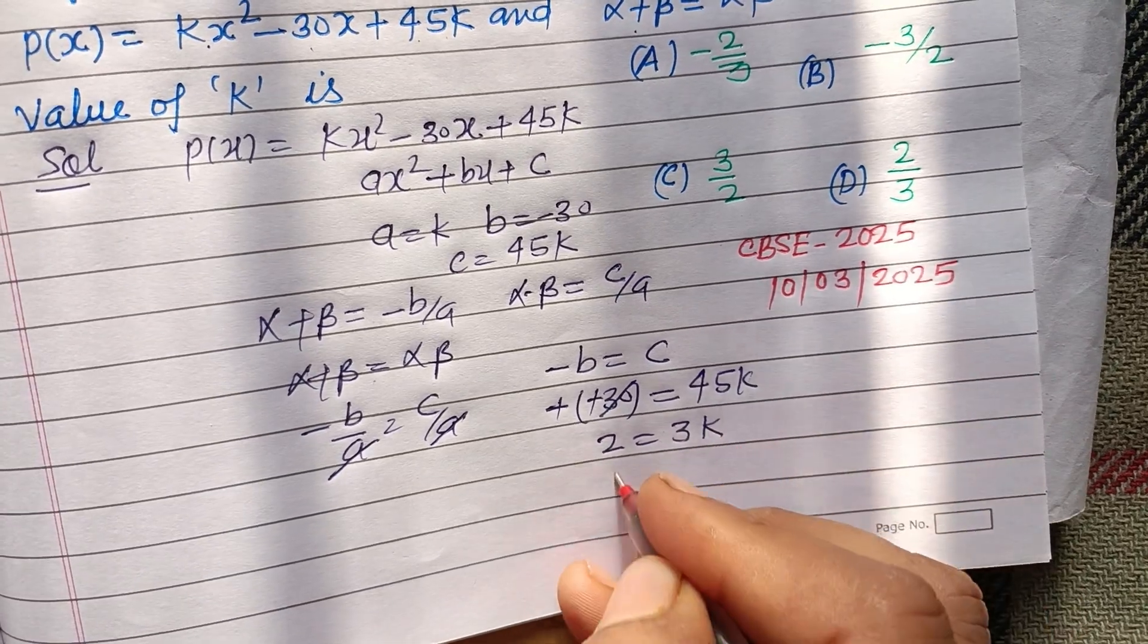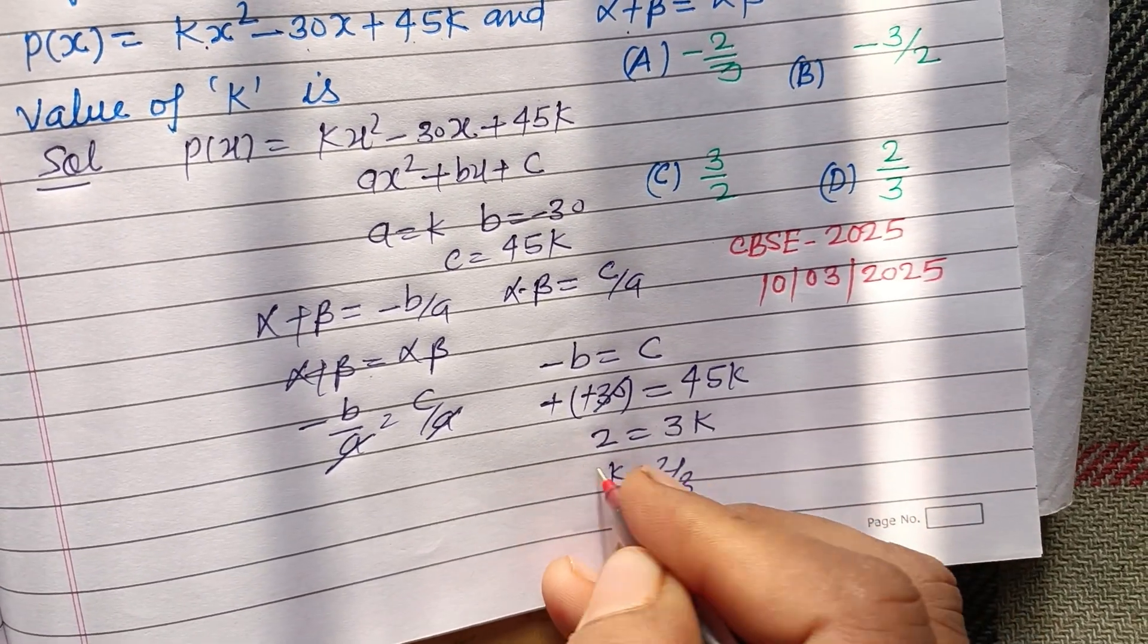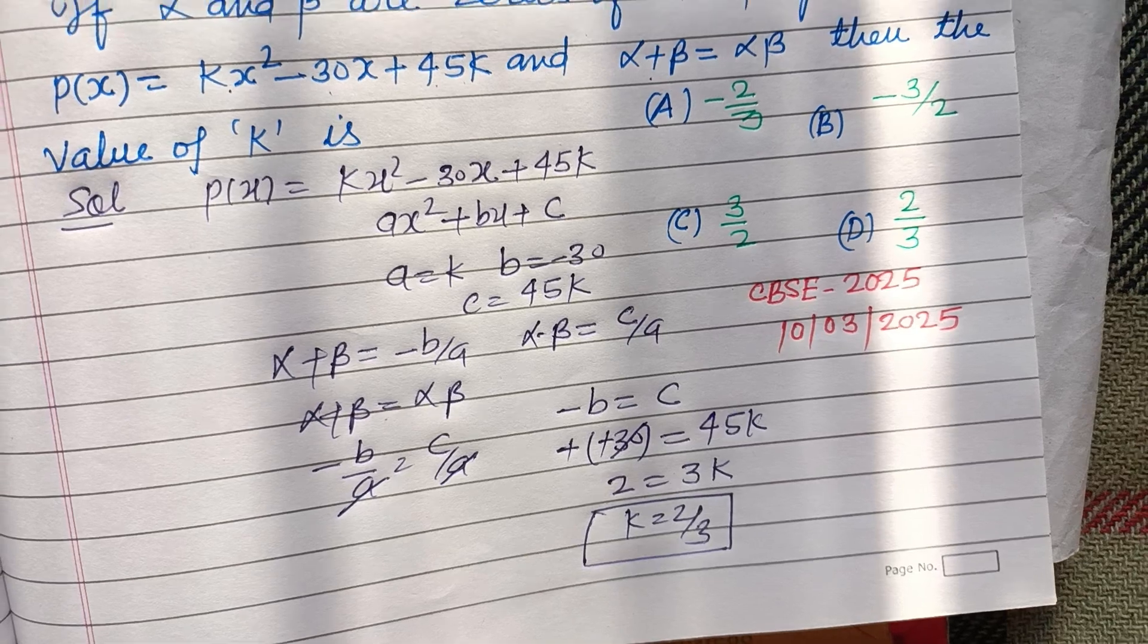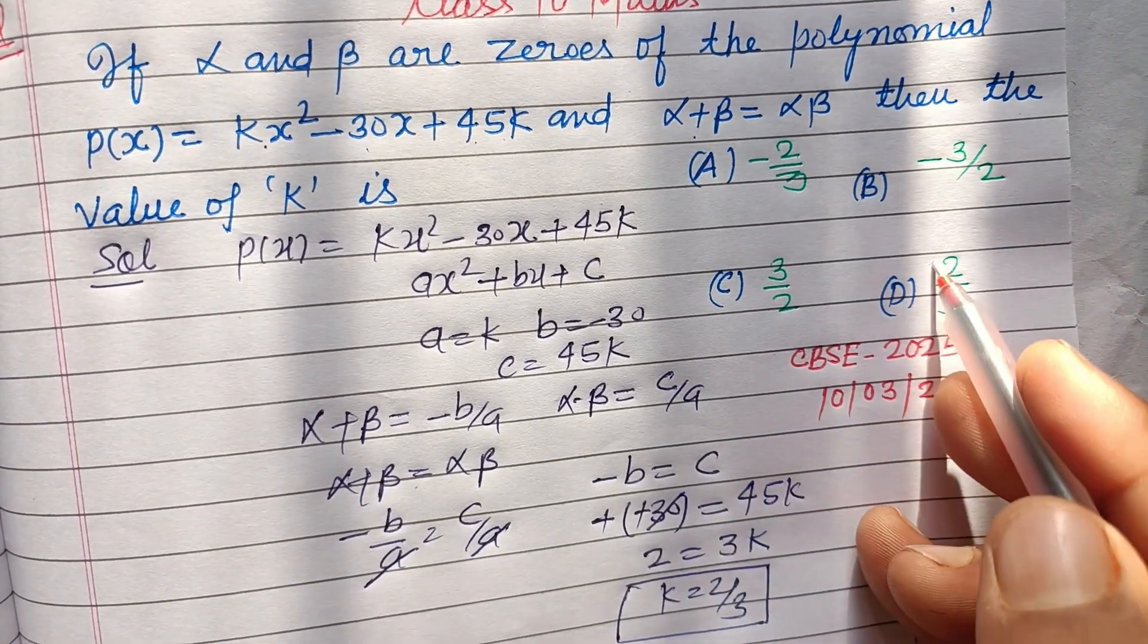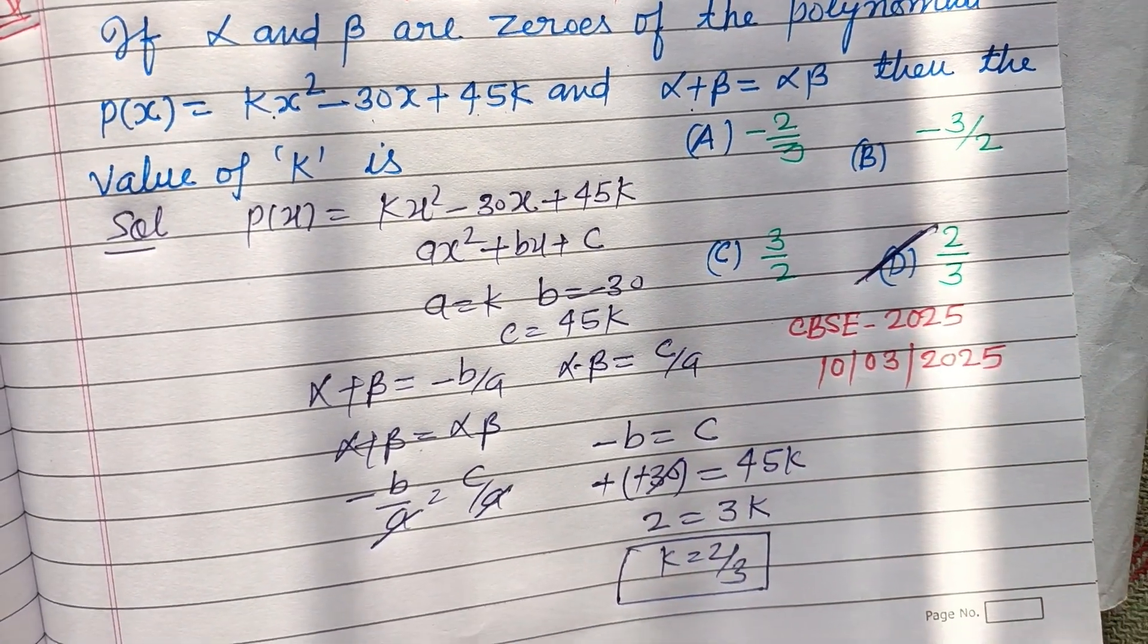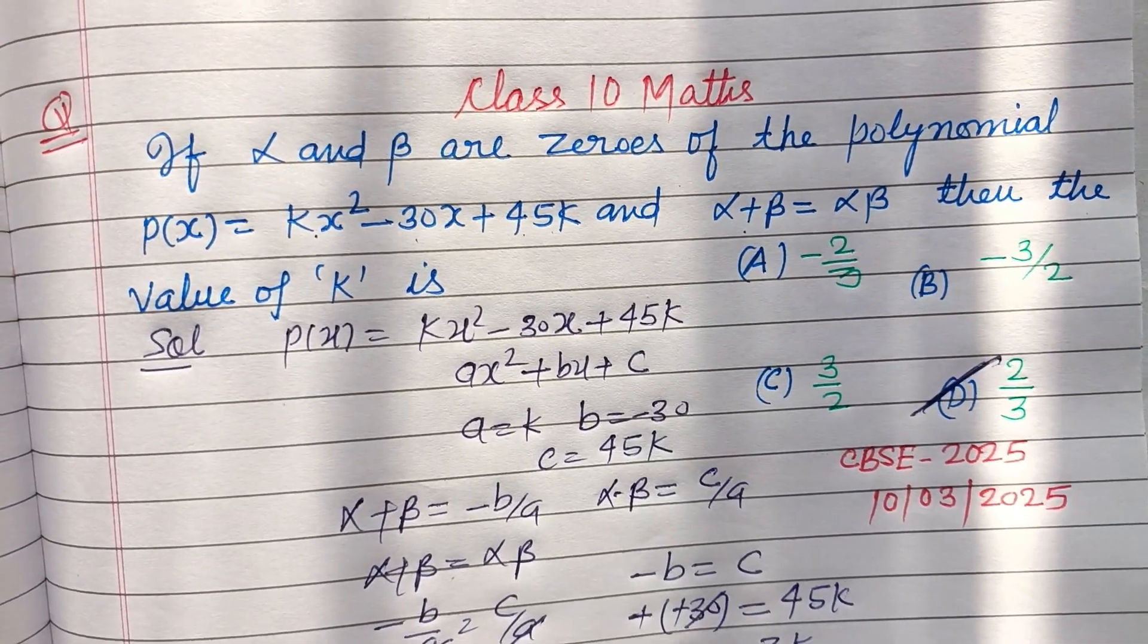So k = 2/3. k = 2/3 is the correct answer to this question, which is found in option D. Therefore, option D is correct.